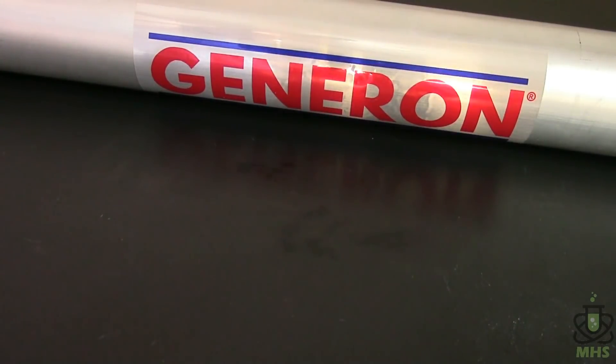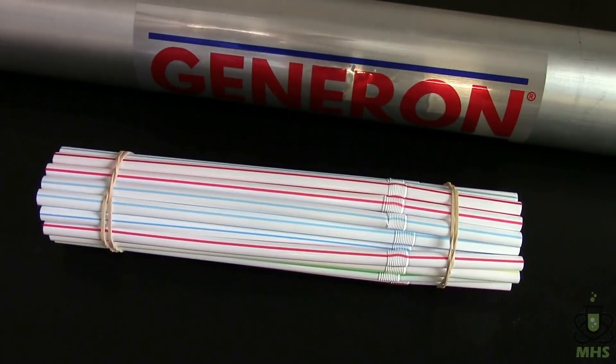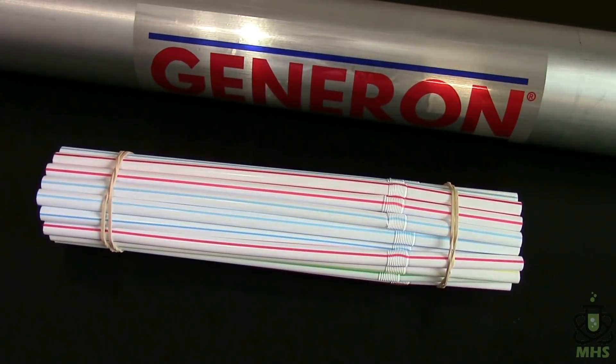The way it does this is the inside of the module is filled with a lot of tiny hollow fibers which you can visualize as a bundle of straws. Now the real fibers inside the module are really tiny. This one module has about 40,000 of them in there so that gives a huge surface area to maximize filtration efficiency.